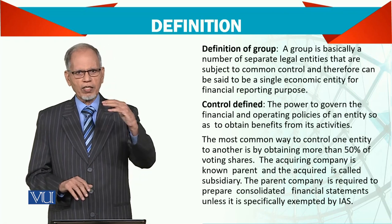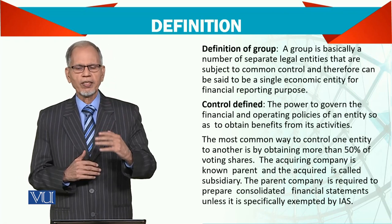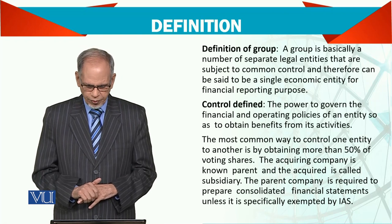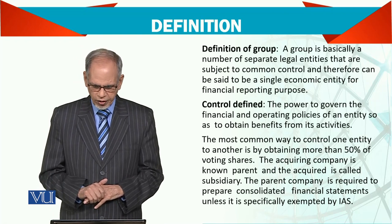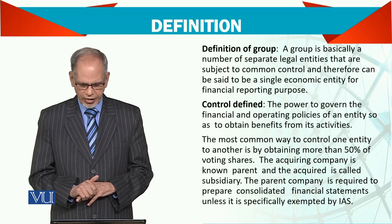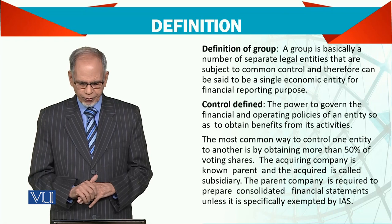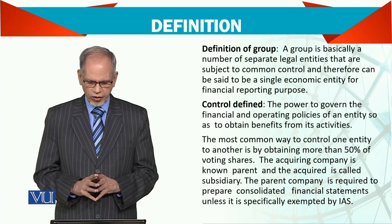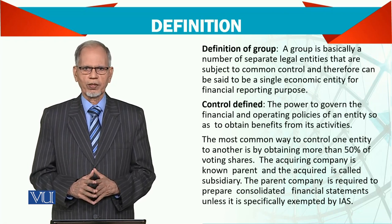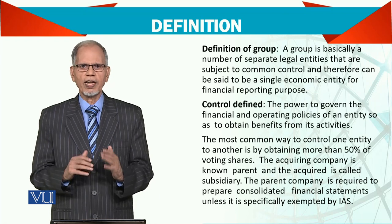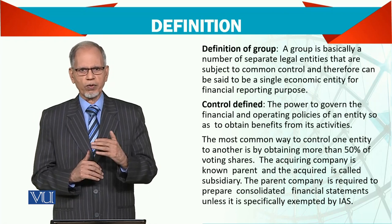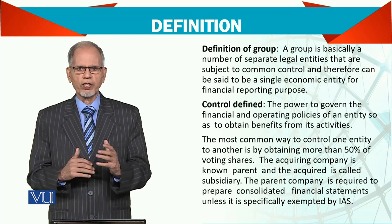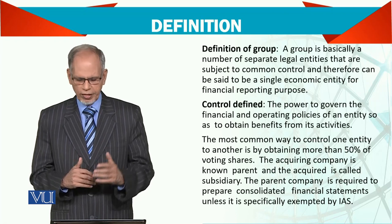Because if you have the control, then the policy framed will be beneficial to you. The most common way to control one entity over another is by obtaining more than 50% of voting shares. Generally, that is the formula — if you get more than 50% of voting shares, we assume that you have control.